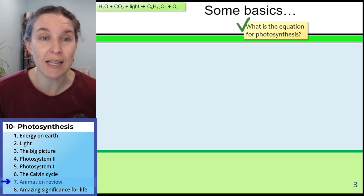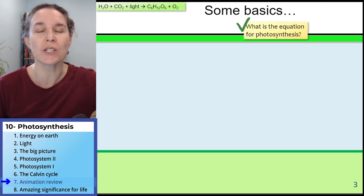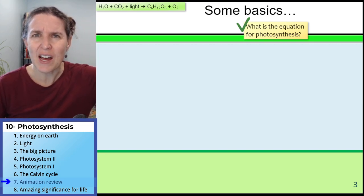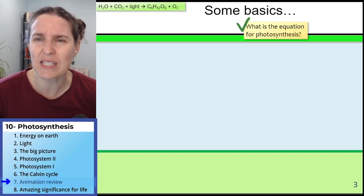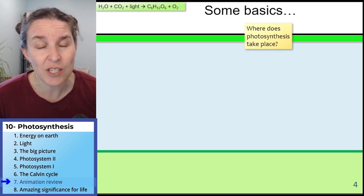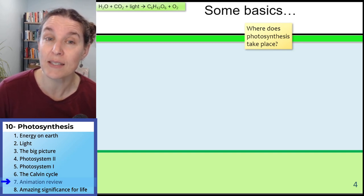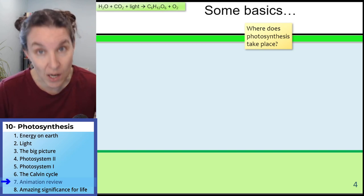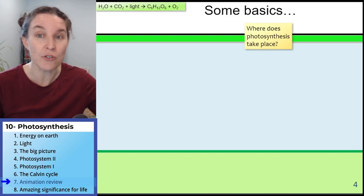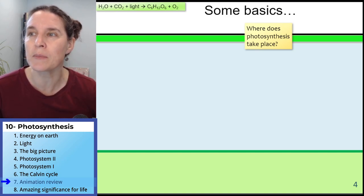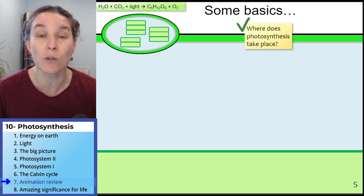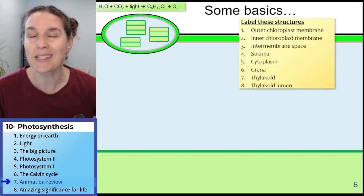Here is our equation for photosynthesis, and I'm just going to keep that equation up in the top corner, just like I did with cellular respiration, so we can remember where all these things come from. Next question: where does photosynthesis take place? With cellular respiration we said mitochondria mostly, but also cytoplasm. In photosynthesis we're a hundred percent dealing with the chloroplast — all the parts and pieces happen in the chloroplast.